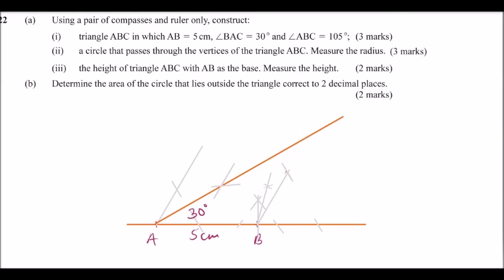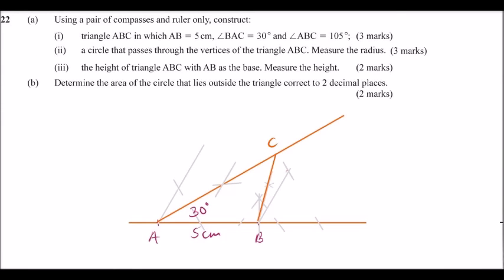Now I will draw a line from B, and where the two lines — the one from A at 30° and the one from B at 105° — intersect, that will be the point C. This line, where the two intersect, that will be the position of C. This is now angle 105°, and we have located C. That is how you construct angle 105°: by constructing 90°, constructing 60°, and bisecting the remaining 30°. So you have now located point C.